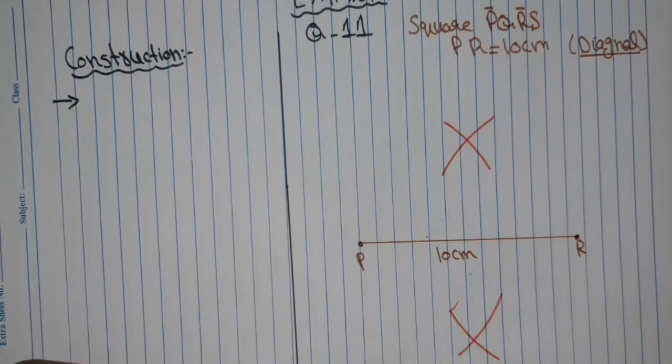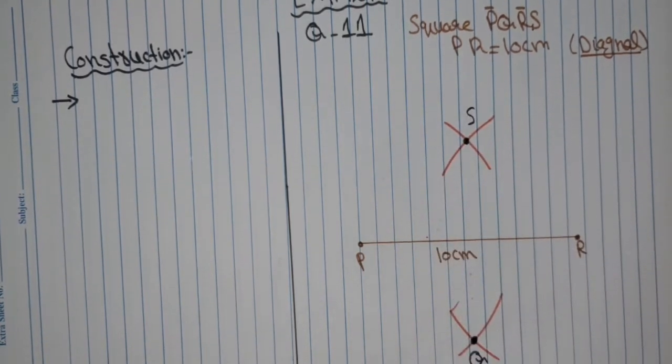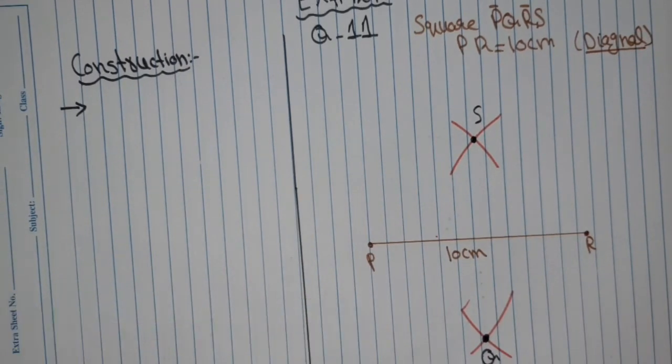So now this point is Q and this point is S. Now we will join these points with the help of a scale.